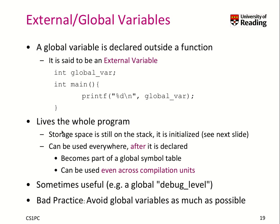What about the lifetime of a global variable? It lives while the program is running. Whenever the program starts, it reserves memory for this variable because it is always there. It is always somewhere in memory and it is initialized. You can use it everywhere in your code after the declaration is known to the compiler, and it becomes part of a global symbol table. You can even use it across compilation units.